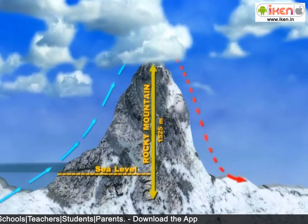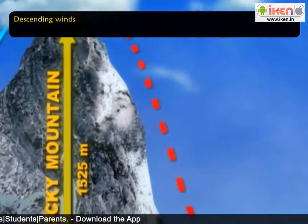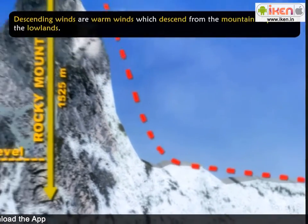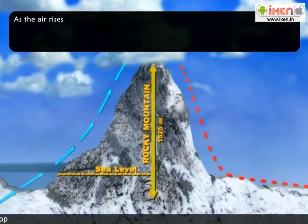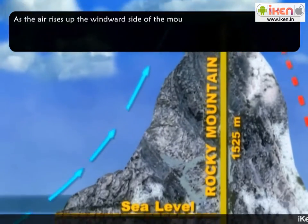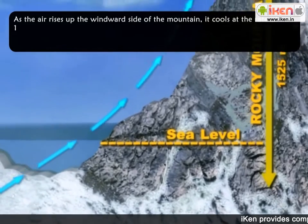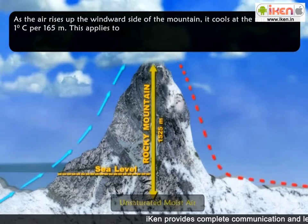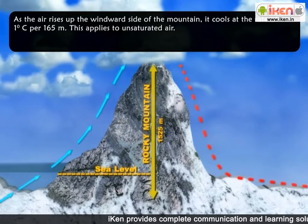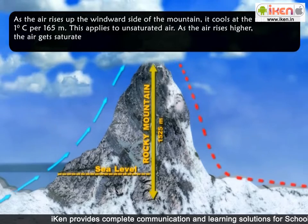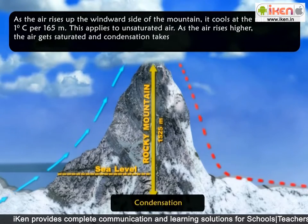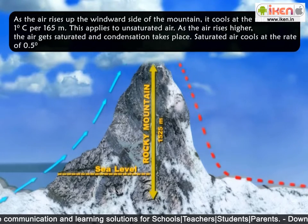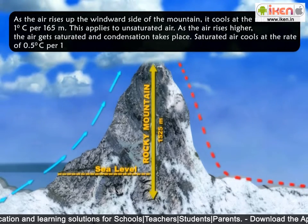The second type of local winds are known as descending winds. These are warm winds which descend from the mountain slopes onto the lowlands. As the air rises up the windward side of the mountain, it cools at the rate of 1 degree Celsius per 165 meters. This applies to unsaturated air. As the air rises higher, it gets saturated and condensation takes place. Saturated air cools at the rate of 0.5 degrees Celsius per 165 meters.